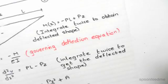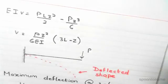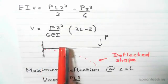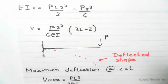From here, we substitute A and B into the equation of deflection. We find that v = (Pz²/6EI)(3L - z).